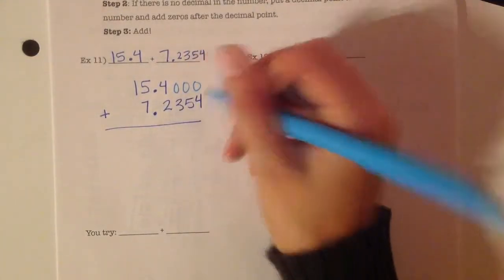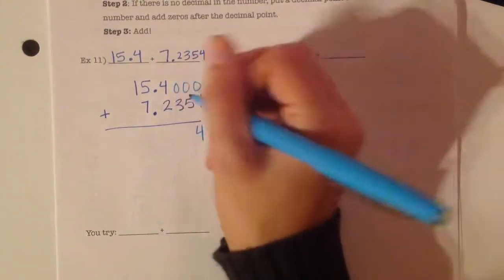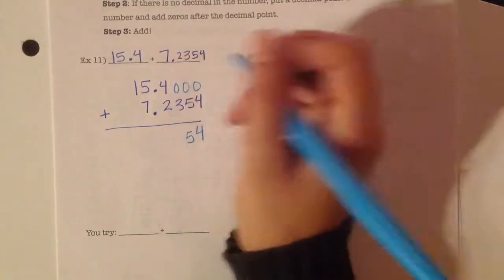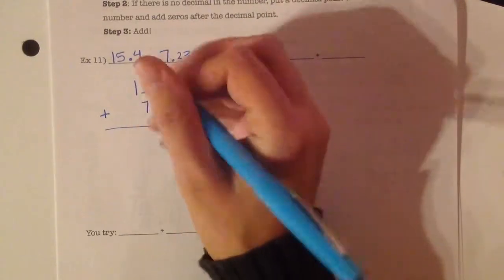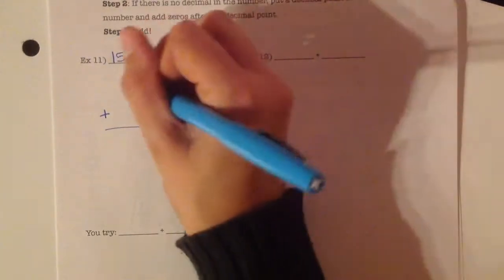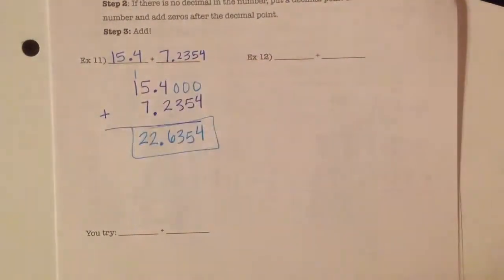Now, I add 0 plus 4 is 4. 0 plus 5 is 5. 0 plus 3 is 3. 4 plus 2 is 6. 5 plus 7 is 12. Carry the 1. 1 plus 1 is 2. And that's my answer.